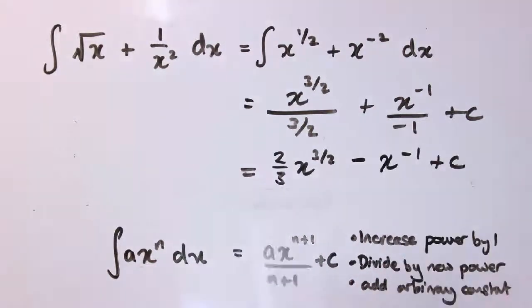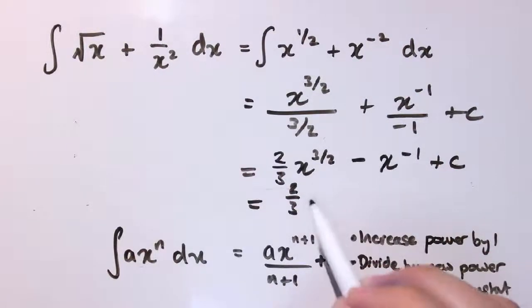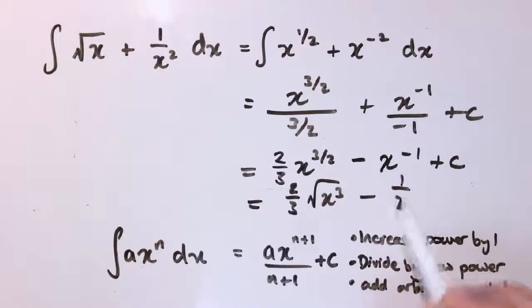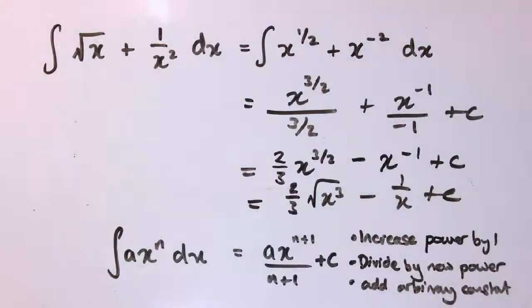If we wanted to, we could put this back into the form a bit more like this. We could say this is 2 thirds times the square root of x cubed minus 1 over x plus c. Knowing how your indices and surds work is really important here.